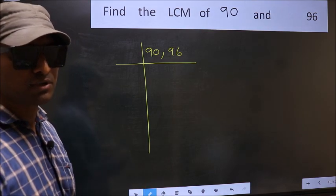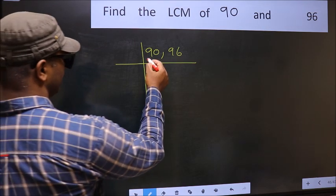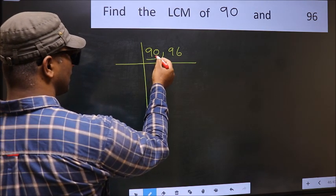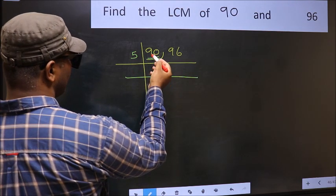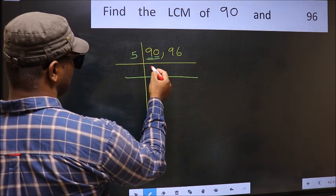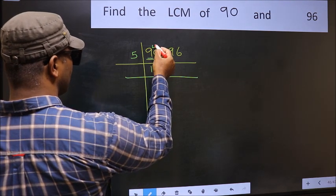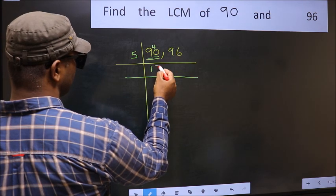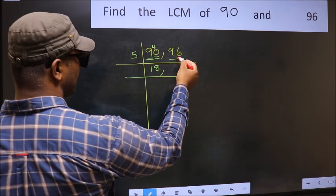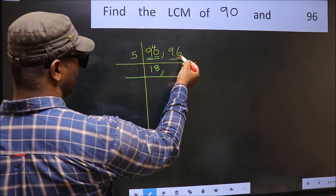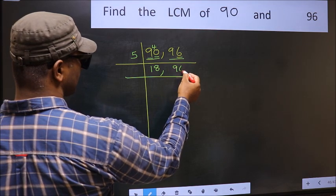Now focus on the first number, which is 90. The last digit is 0, so take 5 as the divisor. The first digit is 9; a number close to 9 in the 5 table is 5 once 5. 9 minus 5 is 4, carried forward gives 40. We get 40 in the 5 table at 5 eights is 40. The other number 96 has last digit neither 0 nor 5, so it is not divisible by 5 — write it down as it is.